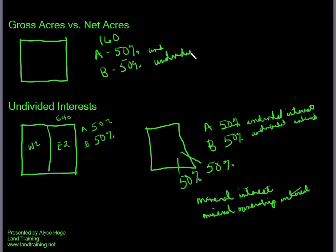They each own 50% of the whole. What we see on the oil and gas lease inserted in this blank is 160 acres. Are we going to pay a bonus based on the 160 acres? Are we going to pay a delay rental payment based on the 160 acres? No, we're going to pay based on what their actual ownership is. So 50% of 160 is 80 acres.